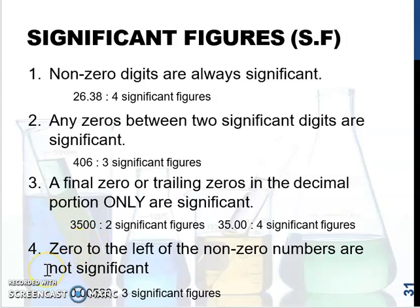Rule number four: zeros to the left of the non-zero numbers are not significant figures. For example, 0.0053 has only two significant figures.